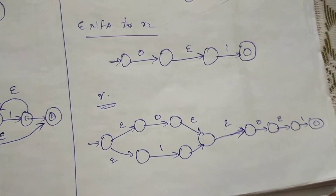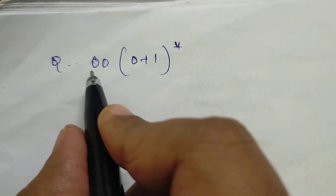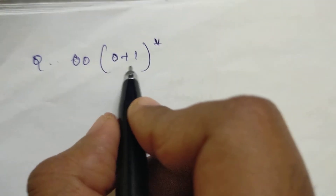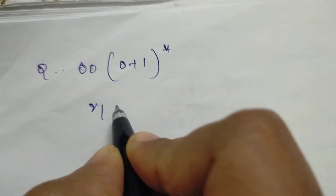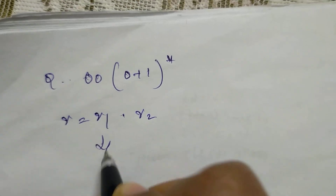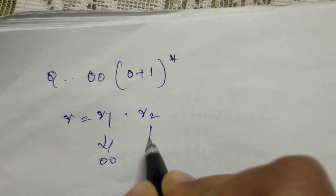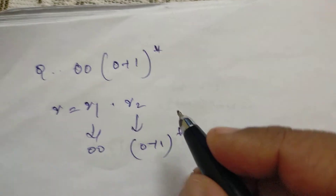This is the corresponding Epsilon NFA for 0 plus 1 — this is the automatic construction. Next question: convert the regular expression 00 dot (0 plus 1) whole star to the Epsilon NFA.